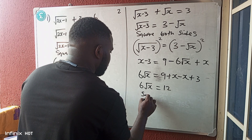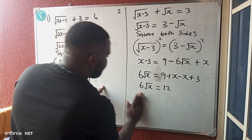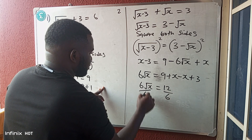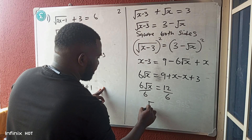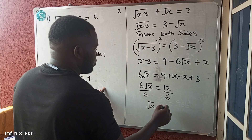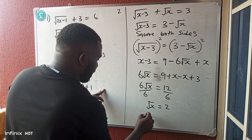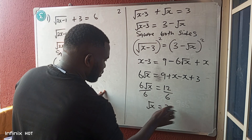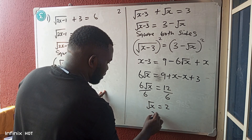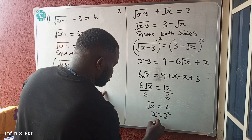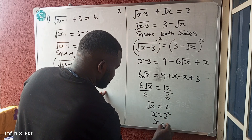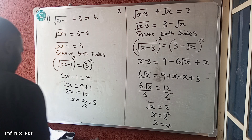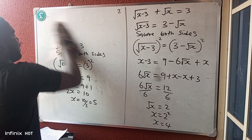Divide both sides by 6, so √x = 2. Square both sides: x = 2² = 4. As simple as that.